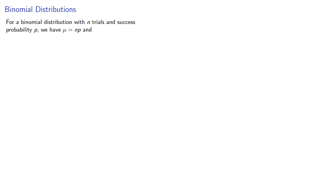On the other hand, a binomial distribution does have a nice way of computing the variance. So remember that for a binomial distribution with n trials and success probability p, we have the mean equal to np. And to find the variance, let's find the expected value of the squares.